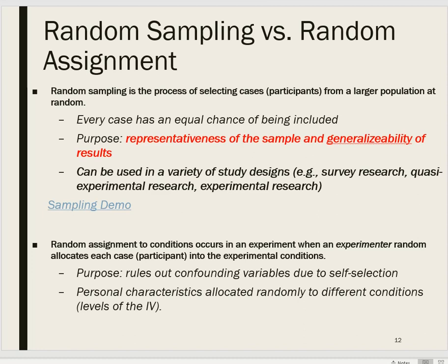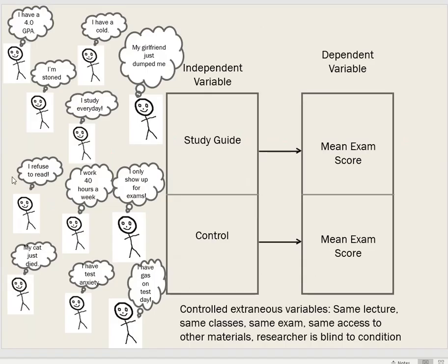For example, using our study guide example: people with higher GPAs versus lower GPAs — we'd want them to be roughly equal across groups. By randomly assigning people to conditions, we would expect the study guide group to have a similar average GPA as the control group. If we allowed self-selection based on who was showing up to class, higher GPA people might all end up in the study guide group and lower GPA people in the control group, and any difference found would be confounded with GPA and study habits.